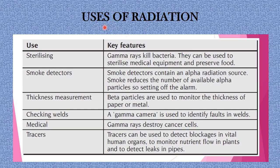Radiation has its own advantages and uses. For sterilization, gamma rays are used because they can kill bacteria — they sterilize medical equipment and preserve or irradiate food, keeping bacteria from spoiling it. Radiation is also used in smoke detectors, which contain an alpha radiation source. Smoke reduces the number of available alpha particles, setting off the alarm.